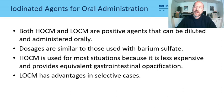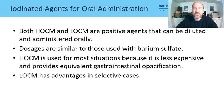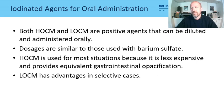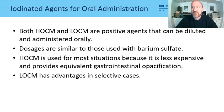Sometimes we use iodine contrast media for oral administration — gastrografin, which generally tastes worse than barium, often diluted into apple juice or crystal light. One advantage: iodine oral contrast is preferred when there's suspected bowel perforation, as it's safer than barium in that scenario. The trade-off is that the image quality may not be as good as with barium.